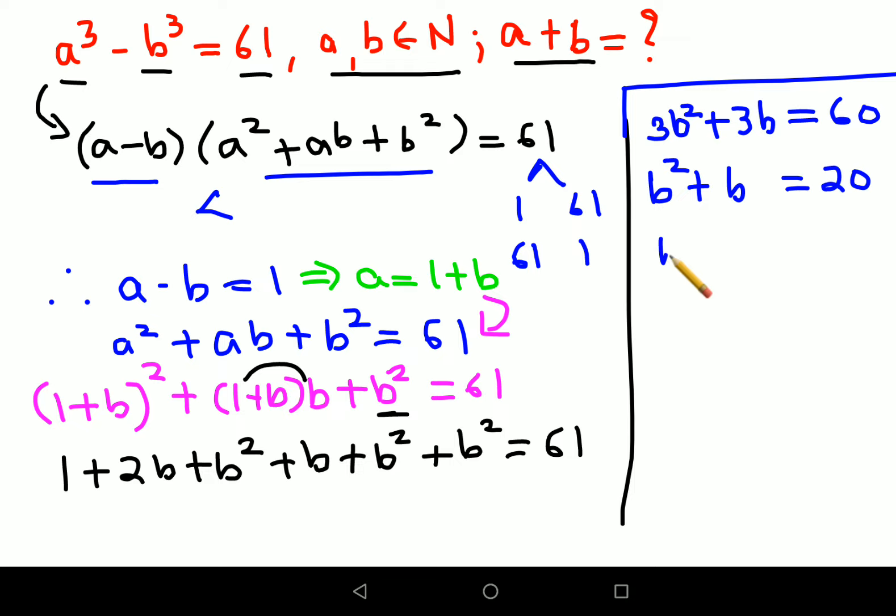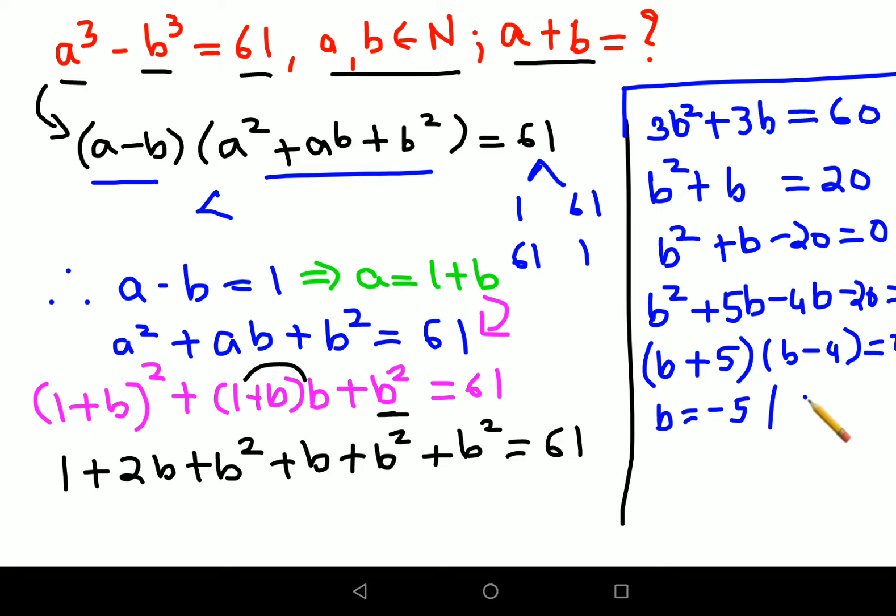Let's shift it on this side. I will get b square plus b minus 20 equals to 0. Now the factors for this quadratic equation should be plus 5b minus 4b minus 20 equals to 0. So I will have b plus 5 or b minus 4 equals to 0. Now value of b can either be minus 5 or it will be plus 4.